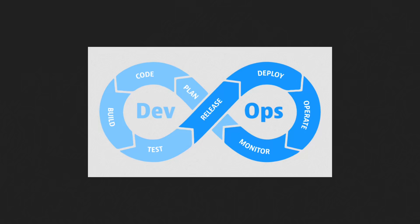Seventh, implement automated testing. Automated testing can help ensure the code being released is high quality. This could include unit testing, integration testing, end-to-end testing, smoke testing, flag testing, and there are a lot of other testing types as well.